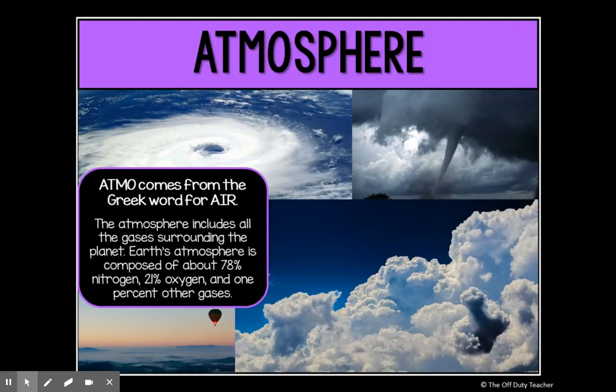Lastly, we have the atmosphere. This word comes from the Greek word for air. The atmosphere includes all of the gases that surround our planet — Earth's atmosphere is composed of about 78% nitrogen, 21% oxygen, and 1% other gases. Our atmosphere is part of what makes Earth a good habitat for life. Other planets don't have an atmosphere that allows enough water to stay close to the ground and feed life, which is part of why Earth has so much biodiversity.